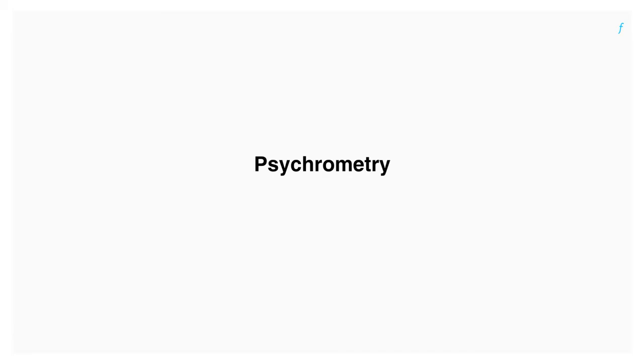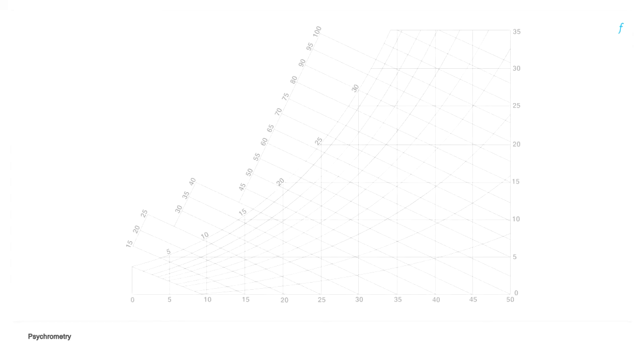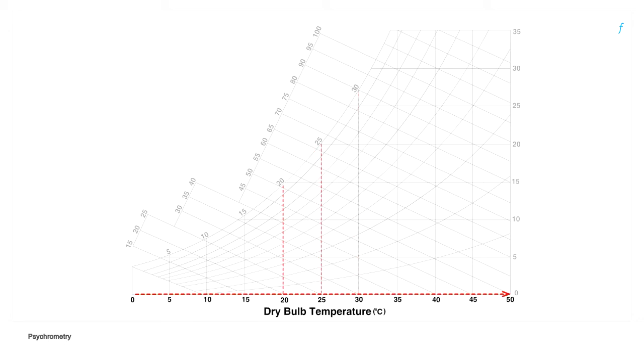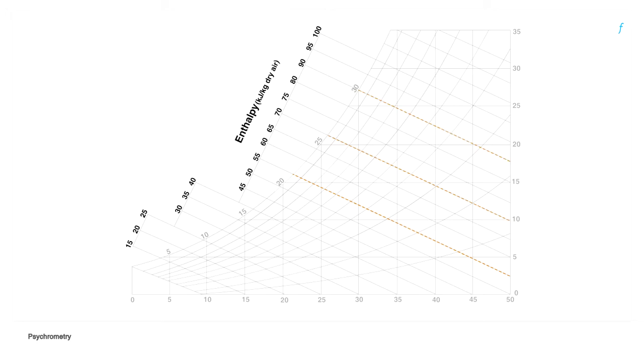Psychrometry is the study of moist air and psychrometric charts are the tools used to study them. Let's have a look at the elements of this chart and use them as a reference to understand evaporative cooling. Dry bulb temperature is represented on the x-axis and increases as we move from left to right. Wet bulb temperature lines are inclined and straight, increasing from left to right along the highlighted curve. Enthalpy lines are also inclined and straight and increase in the direction of the highlighted curve.